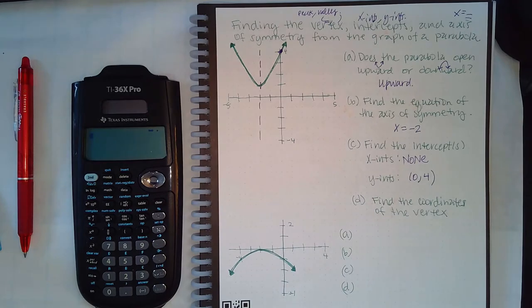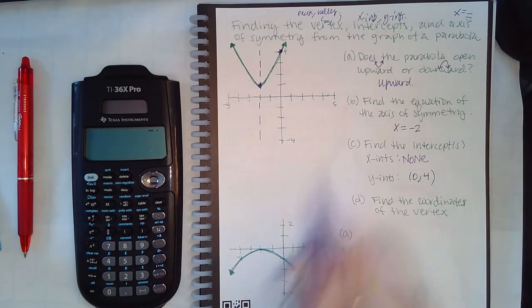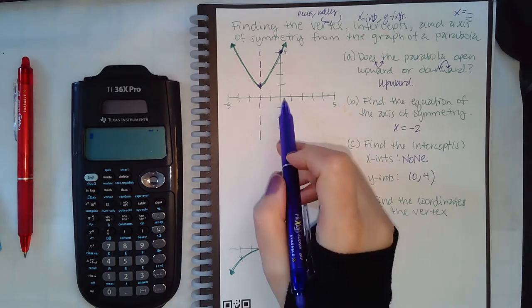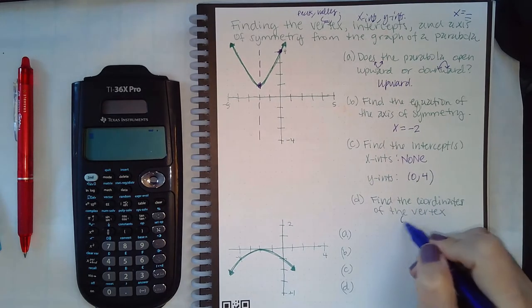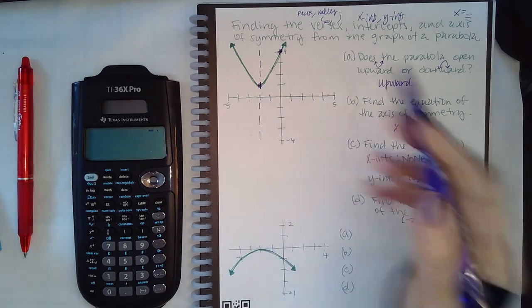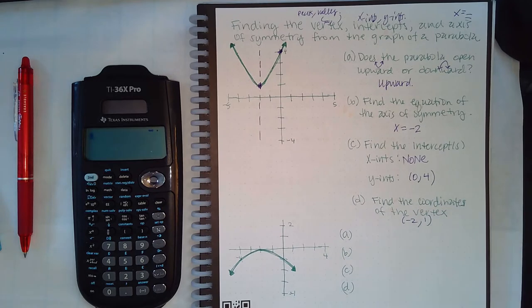Find the coordinates of the vertex. This little valley here is the vertex. The x-coordinate is negative 2 and the y-coordinate is 1.